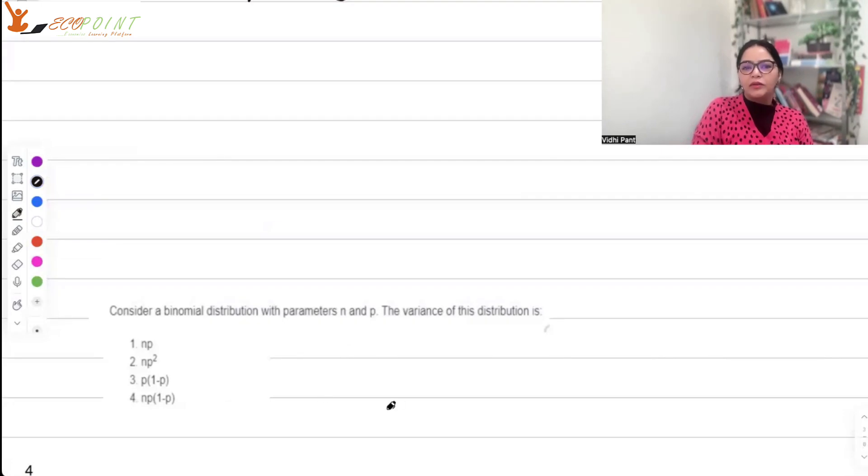You have a binomial distribution with parameters n and p. The variance is, we all should know, npq where q = 1 - p, so it's np(1 - p), and that is option 4.